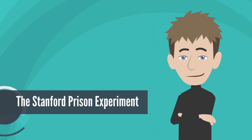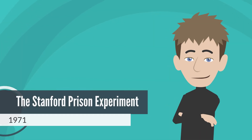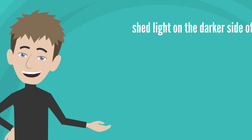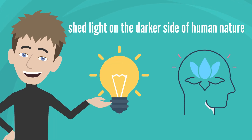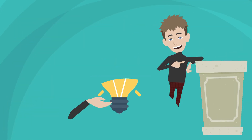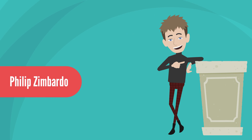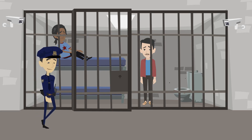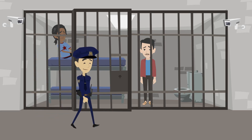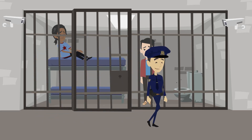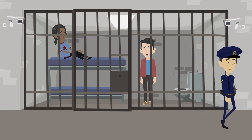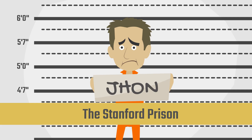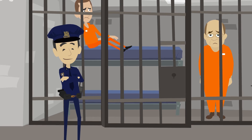The Stanford Prison Experiment, conducted back in 1971, is a well-known psychological study that shed light on the darker side of human nature. Led by psychologist Philip Zimbardo, the experiment aimed to explore how ordinary individuals would behave in a simulated prison environment when assigned to play the roles of either prisoners or guards.